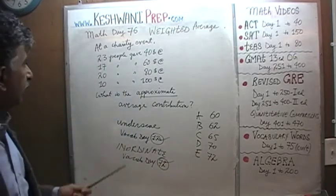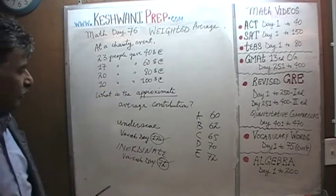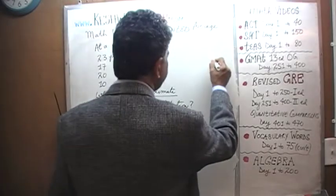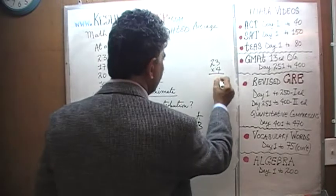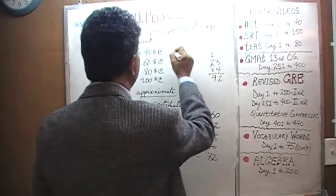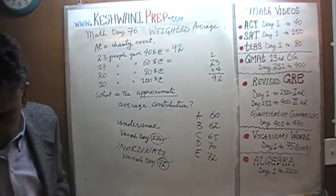Anyway, let's begin our work here. The 23 people gave $40 each. You have to figure out what 23 times 4 is. 23 times 4 is very straightforward. 4 times 3 is 12, carry 1. 4 times 2 is 8, plus 1 is 9. This is going to be 92.